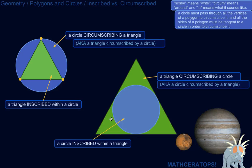A circle or some other figure can circumscribe another figure like a triangle, or a circle could be inscribed within another figure like a triangle. A triangle can be inscribed within a circle, or a triangle could circumscribe a circle.